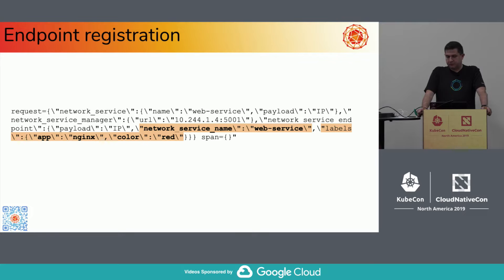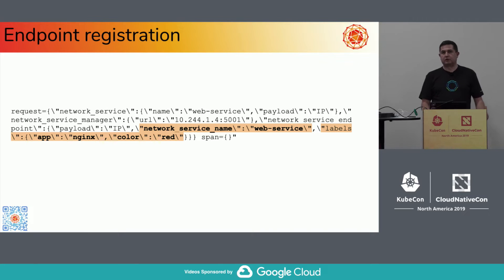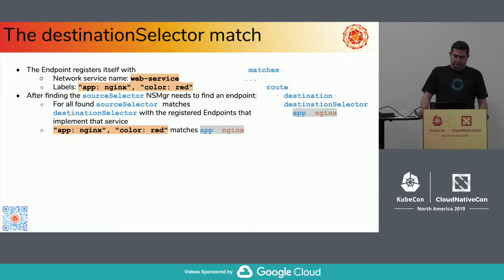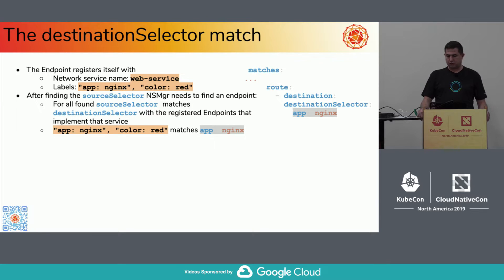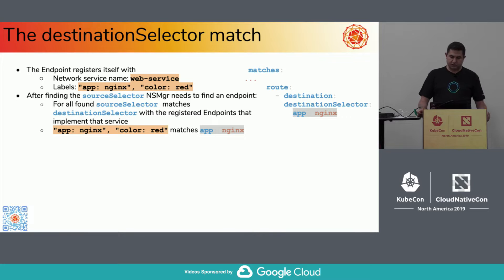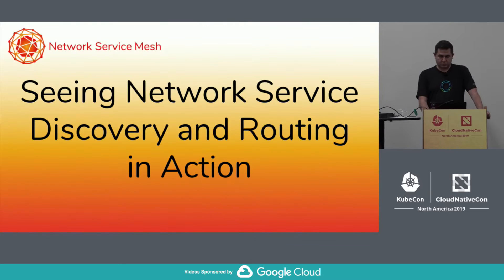Before that, let's see how endpoint registration works. At the time of its instantiation, the endpoint can and should register itself if it wants to be found. In this case, this is the dump of the specific endpoint, which announces itself as implementing the network service called 'web service'. It says it's labeled with app Nginx and color red — meaning it's an Nginx application and will serve something colored red. For destination selector matching, it tries to find a specific destination — an endpoint that has app equals Nginx at least. Since this endpoint announced itself as Nginx with color red, it has at least app Nginx, so it matches.